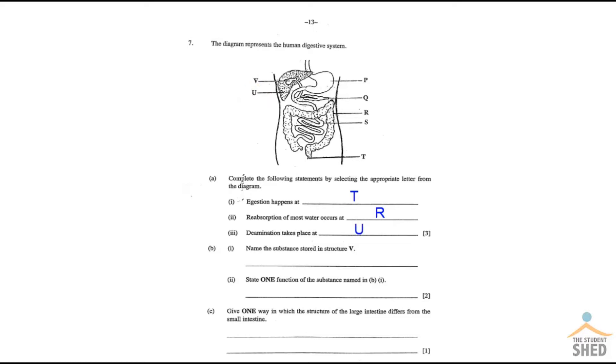So you're being asked here in B1 to name the substance stored in structure V. Now a big mistake, probably the most common mistake that happens with these sorts of diagrams, is students don't look enough and don't pay enough attention to what the arrow is pointing at. You need to make sure that when you look at V, you follow the line all the way to the end and see what it's pointing at. It's not pointing at the liver, it's pointing at something else.